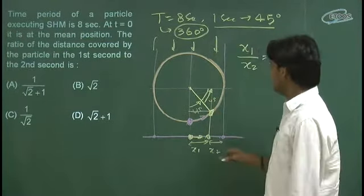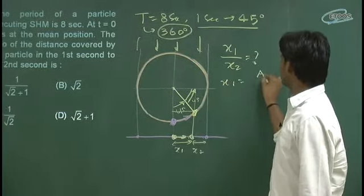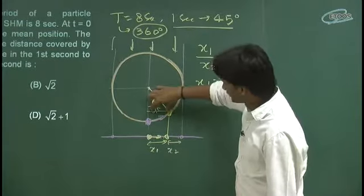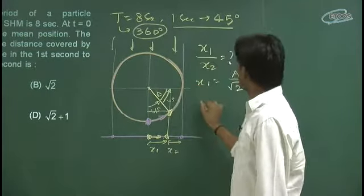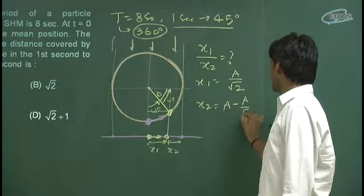Ab dekho ye wali cheez kya hogi? A. To x1 ki value hogi a by root 2. Kyunki agar ye a hai, to ye kitna hoga a by root 2. Or x2 ki value kya hogi? x2 ki value hogi a minus a by root 2.